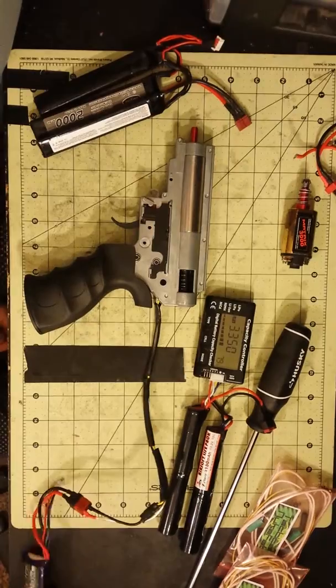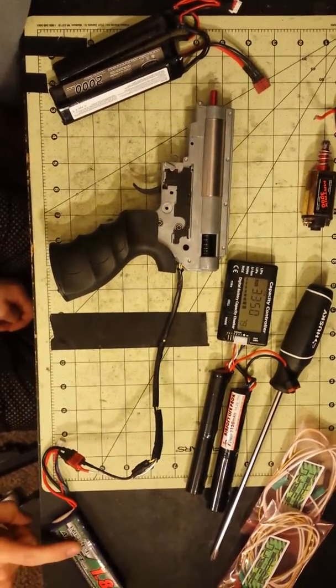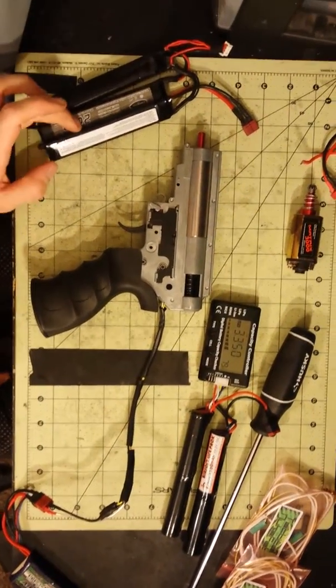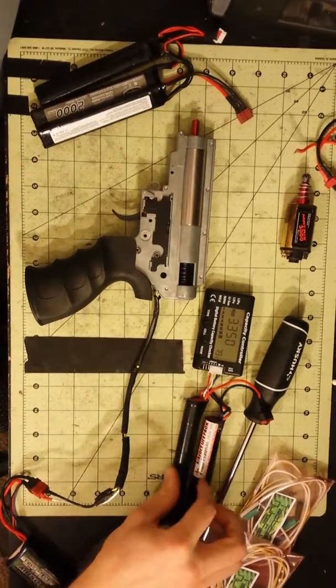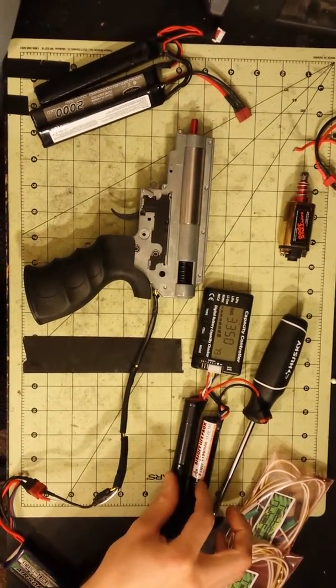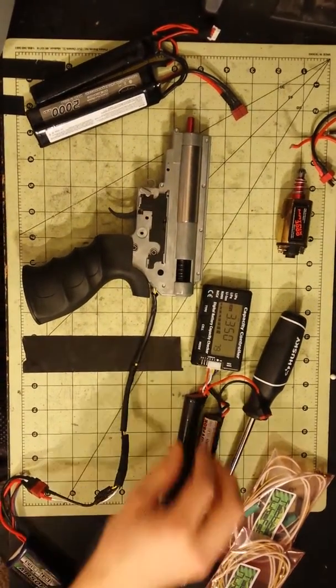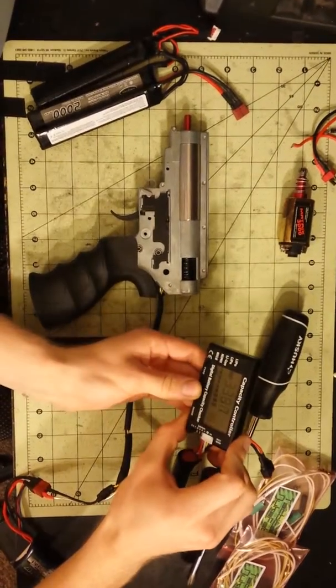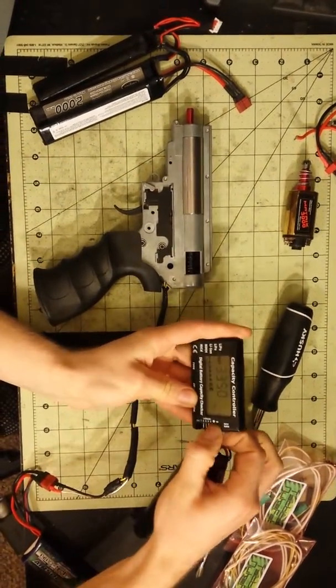I'm going to test out three different types of batteries. This is a 7.4, we got ourselves 11.1, and I'm going to try out a 13.2 LIFE. All these batteries are full, or at least 80% or higher, as you can tell.